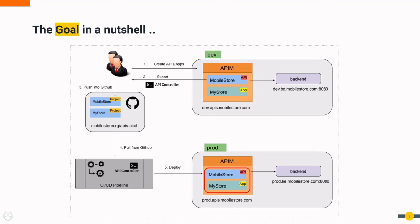As the first step, they will create the API and the application in the dev environment using the API Manager portals. After that, the API and the application have to be exported from the dev environment using the CLI tooling available in API Manager, which we call the API Controller. Once the projects are exported, those need to be committed to the GitHub repository. After that, the CI/CD pipeline process will fetch the API and the application projects from GitHub and deploy them into the production environment.